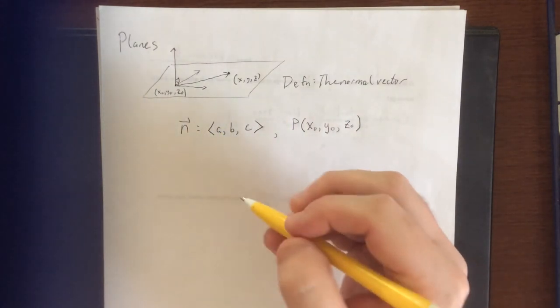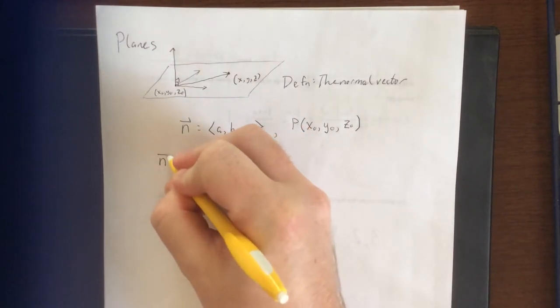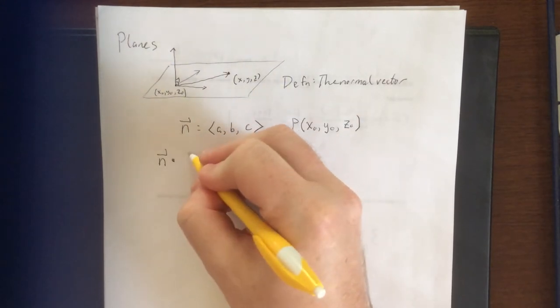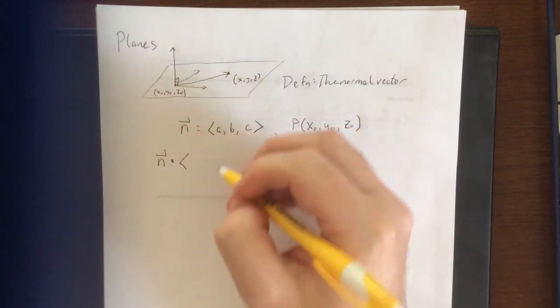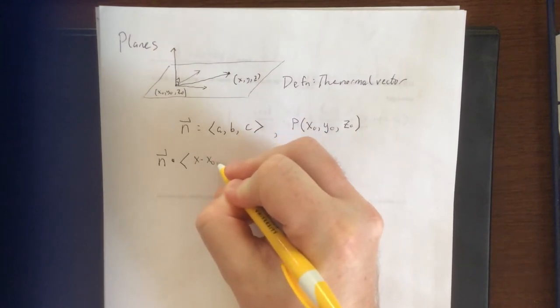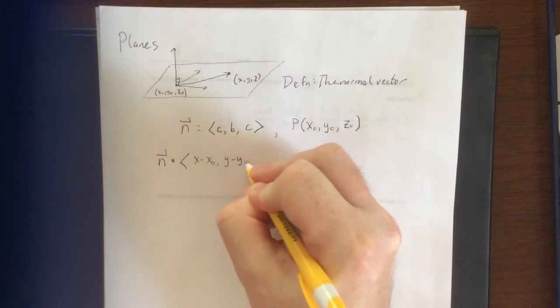Therefore, if I were to take the normal vector and dot it with this vector that I just created, let's see, how would that go? We'll do terminal minus initial, so x minus x naught, y minus y naught.